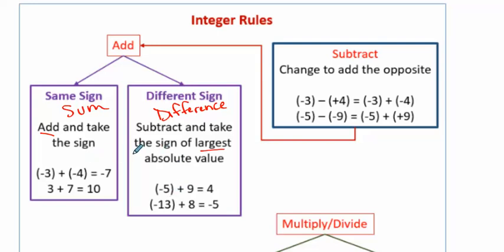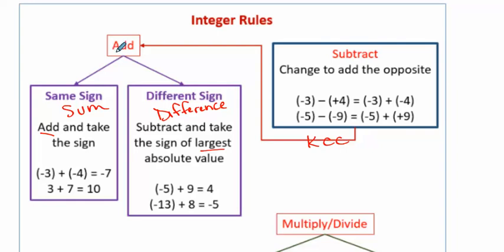When we got to subtraction, it took a little bit more thought. A lot of it you had to rewrite, so you wanted to keep, change, change. So keep the first one — negative three — change it to an addition problem, plus, and then change the sign of the second number. Then once you have it as an addition problem, you go back and follow the addition rules. So that's what we worked with yesterday.